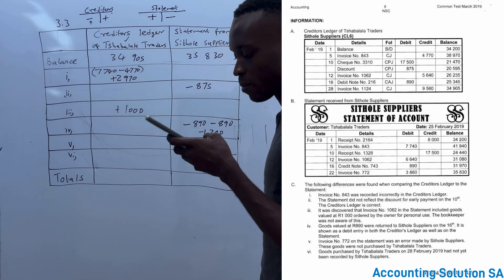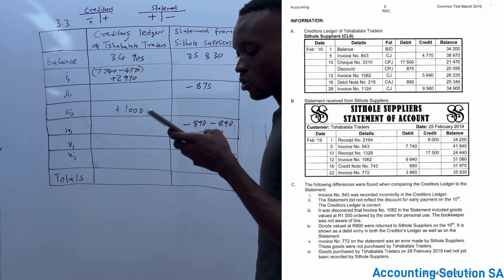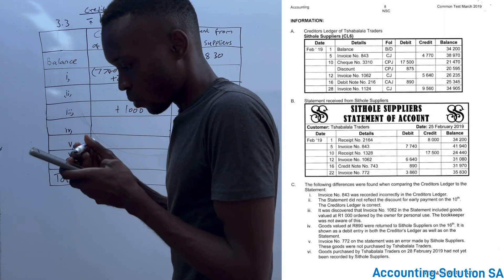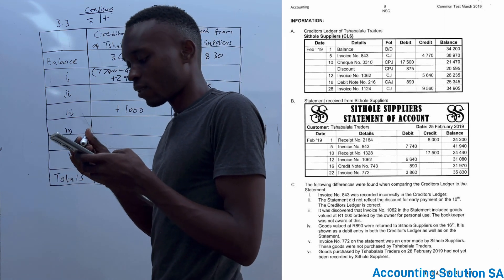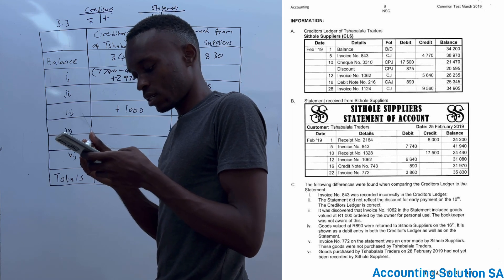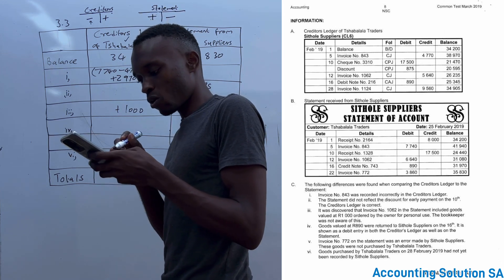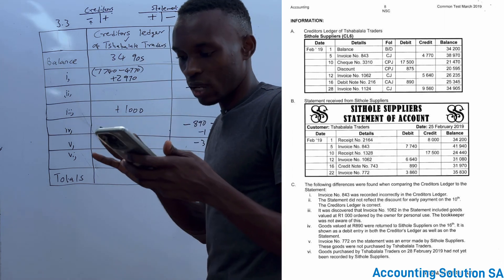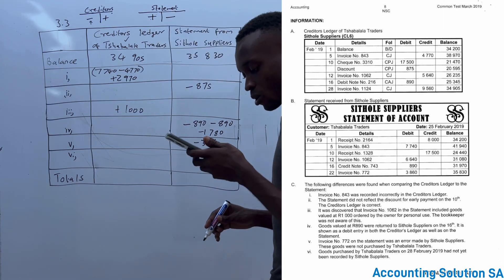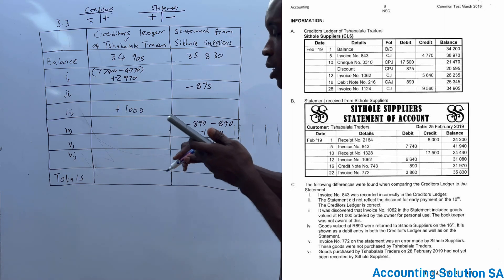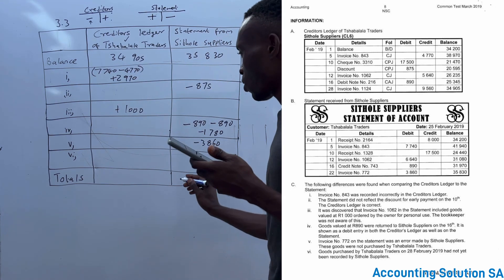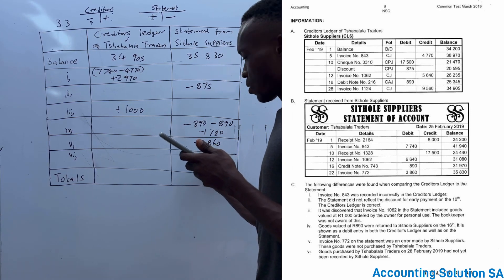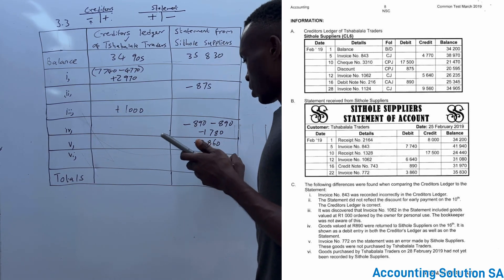Number six: Goods purchased by Chavalala Traders have not been recorded by Citola Supplier. We recorded an amount of R9,560 on the 28th in our creditors ledger, but when we check the statement this purchase is not there at all. We have to record it on the statement side as an increase of R9,560, because it has increased the supplier's liability.